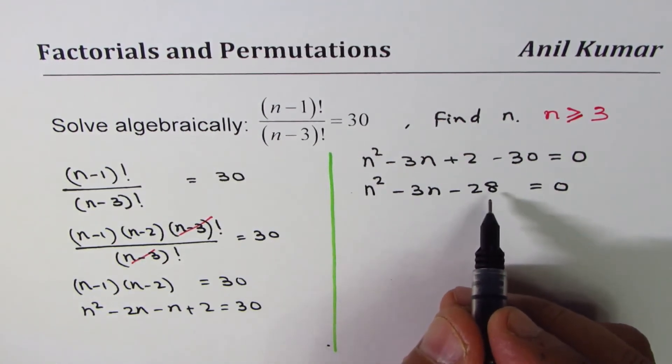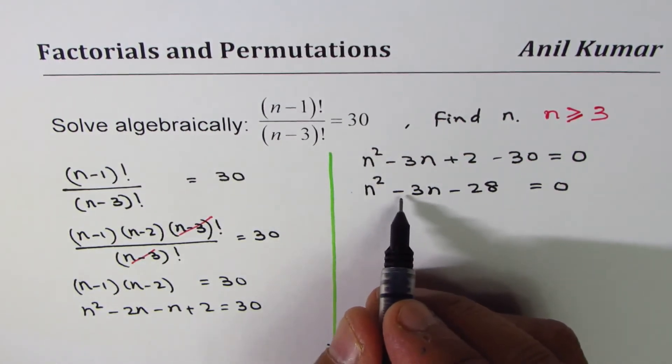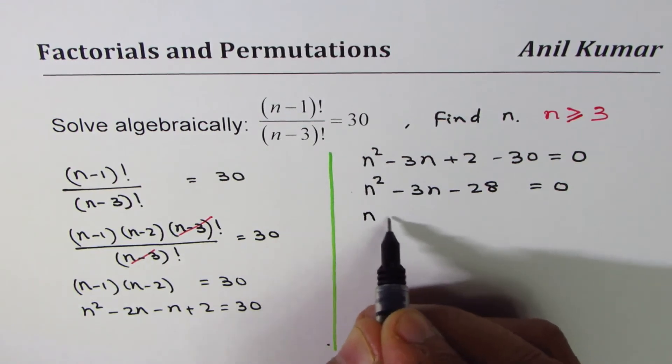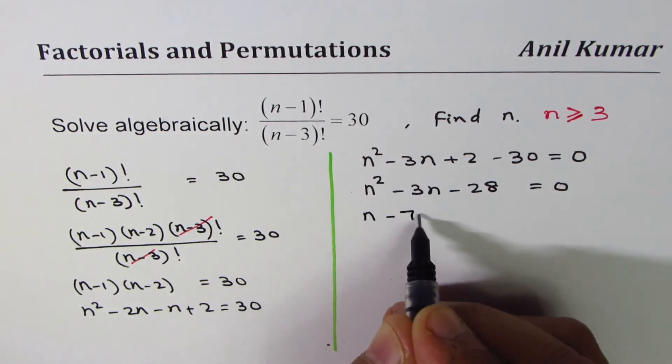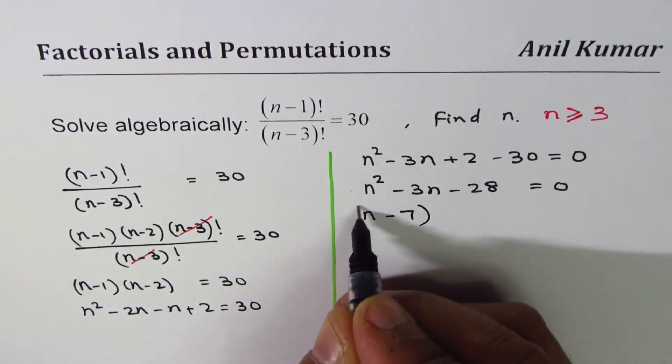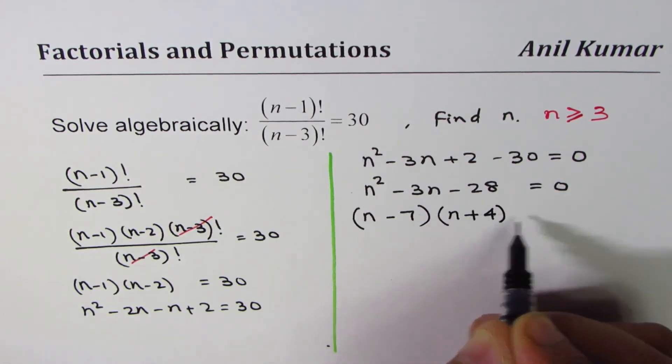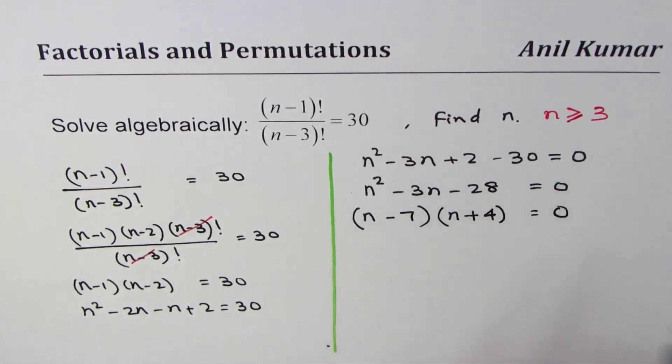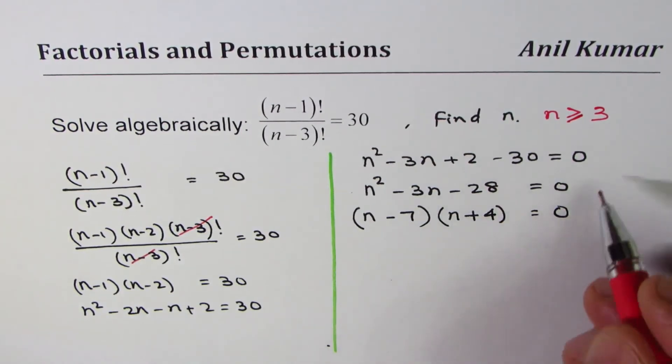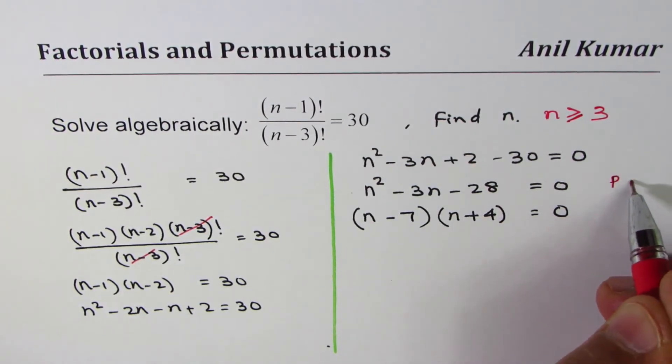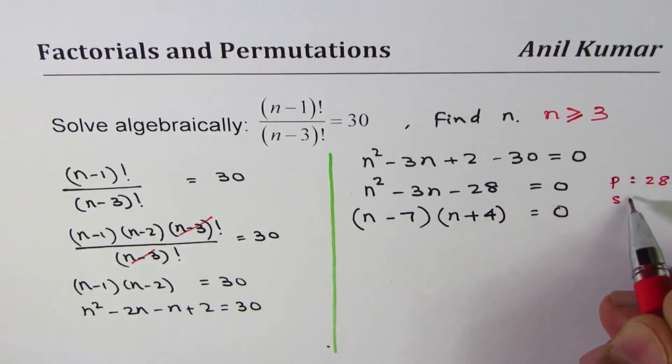Now we can factor this. 7 times 4 is 28. We need negative 3n, so we can write this as (n-7) times (n+4). Correct. So that is how we can factor this. We are looking for product of 28 and sum of minus 3. So the numbers are minus 7 and 4.